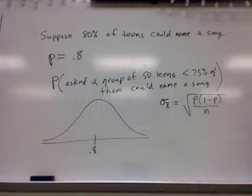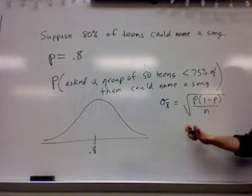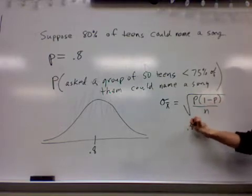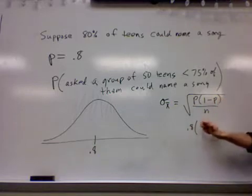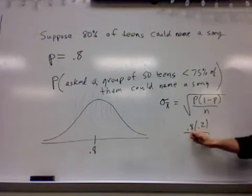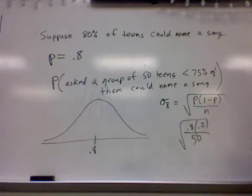So we can develop a standard deviation, a way to describe the spread of this curve, by following this formula. Here P is 0.8, so 1 minus P is 0.2, divided by 50 students, and you're square rooting that number. Doing that on a calculator ends up giving you about 0.0565.